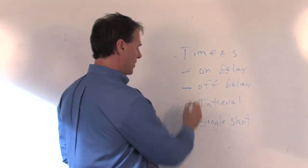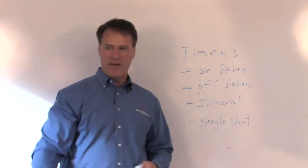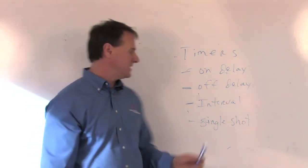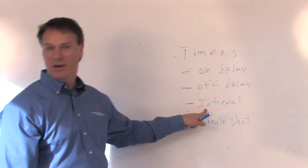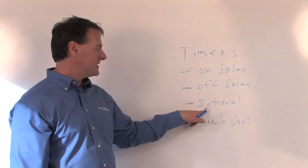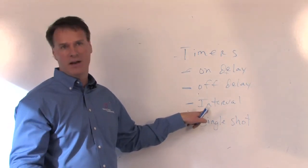Interval timer. You're at the, getting your, vacuuming your car and you put two quarters in. It gives you 60 seconds. That's a timer in there. Something we sell. It's a 60-second interval of time or three-minute interval of time.